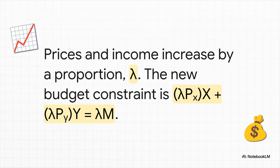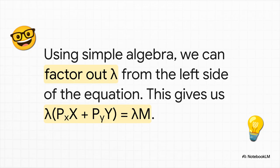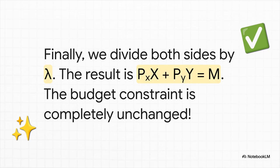Step two: we do exactly what the question asks — increase all prices and income by the exact same proportion, lambda. It could be 2 for doubling, 1.5 for a 50% increase, whatever. We pop lambda next to each price and the income. Step three: notice that lambda appears in both terms on the left side, so we factor it out. Step four: we've got lambda on both sides of the equation, so we divide both sides by it — they cancel out. And what are we left with? The exact same budget constraint we started with. This is the big aha moment.